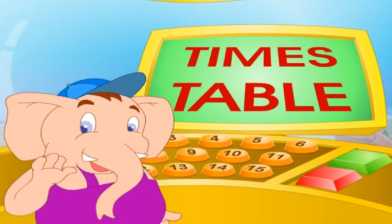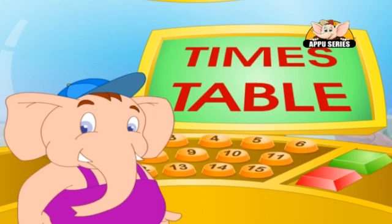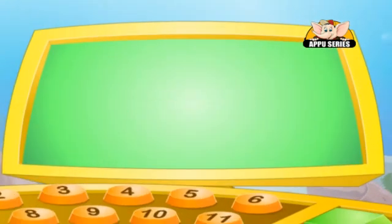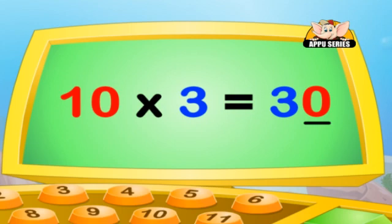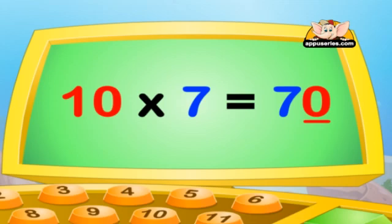Now we will learn our tens table. In the tens table, you just have to put a zero in the units place and you will get your answer. For example, 10 into 3 equals 30 or 10 into 7 equals 70. We just added zero at the end to get the answer.